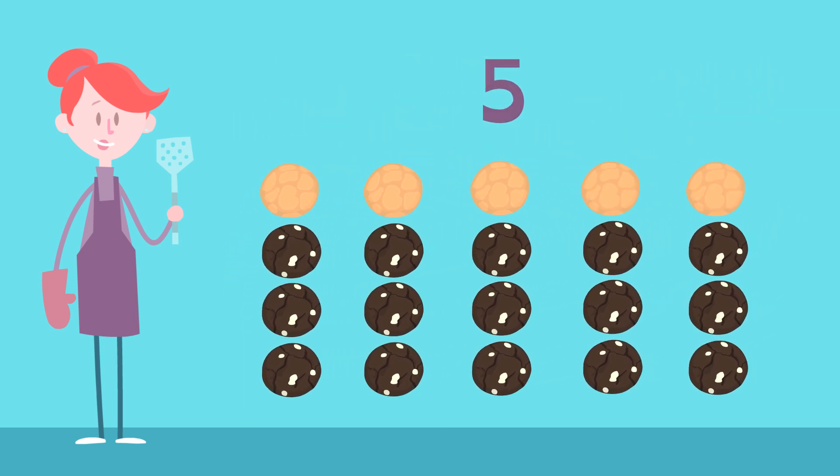Lucy makes 5 groups of 1 lemon and 3 chocolate cookies and distributes them equally among her 5 friends. This expression shows the arrangement of cookies.